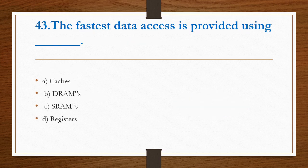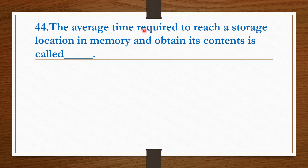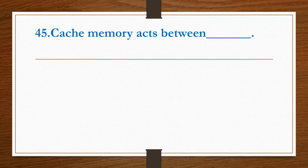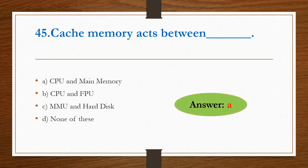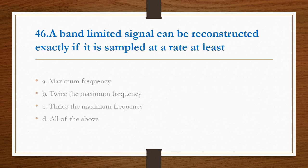The fastest data access is provided using registers. Option B is the right answer. The average time required to reach a storage location in memory and obtain its content is called access time. Option B is the right answer. The cache memory acts between CPU and main memory. Option A is the right answer. A band limited signal can be reconstructed exactly if it is sampled at a rate at least twice the maximum frequency in acoustic rate. Option B is the right answer.